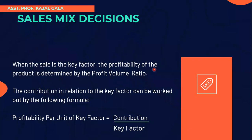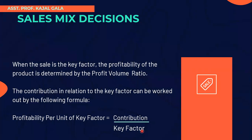The key factor can be utilized for any resource — labor, machinery, or raw material. Where the short supply is, we can use the key factor. Profitability per unit of a key factor is found by dividing contribution by the key factor: sales minus variable cost gives contribution, divided by the key factor. The product which gives the highest contribution per unit of the key factor can be produced in larger quantities to earn maximum profit.